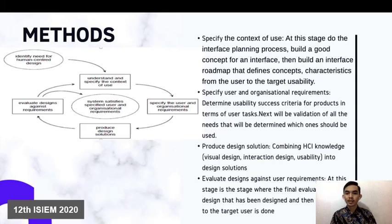The second step is to specify user and organizational requirements — determining usability success criteria for the product in terms of user tasks, and determining decisions and limitations. This stage has the purpose of finding user problems and making a direction for the assessment that contains the needs of the user.